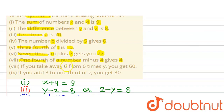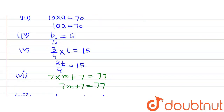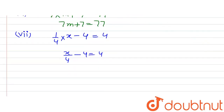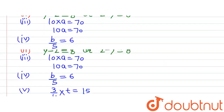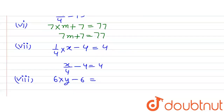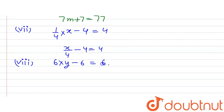The eighth part says that if you take away 6 from 6 times y, you get 60. Taking away 6 means subtracting 6 from 6 times y. So the equation is 6y - 6 = 60.